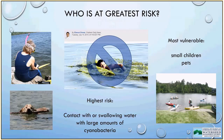Those at greatest risk are small children and pets, because they are not concerned about the water they're playing in or drinking. Small children are very likely to put things in their mouth or swallow water when swimming. For adults, the highest risk comes from contact with or swallowing water that contains large masses of cyanobacteria — such as when swimming, snorkeling, jet skiing, or water skiing. We very strongly recommend avoiding swimming in water that looks like the image shown in the center of the screen, which contains a large amount of cyanobacteria.